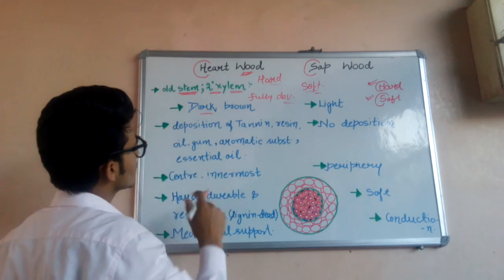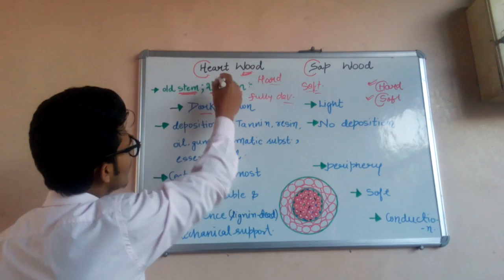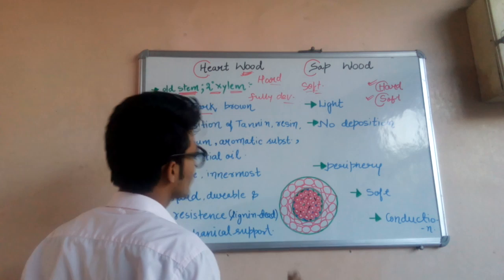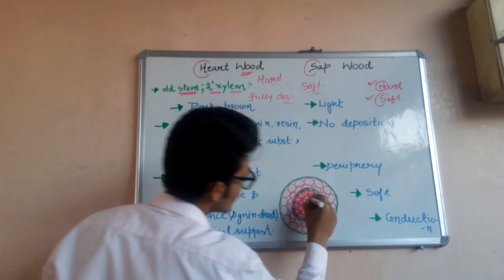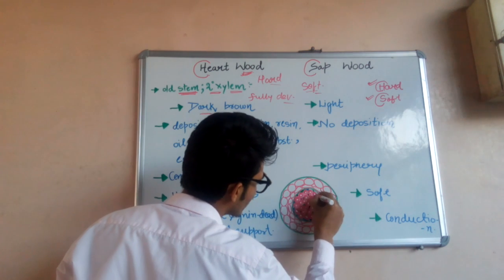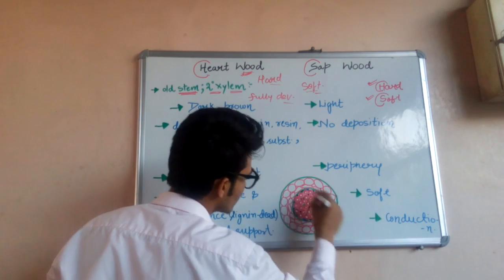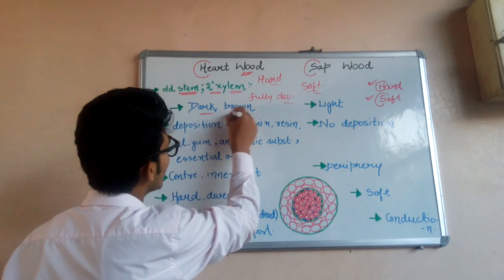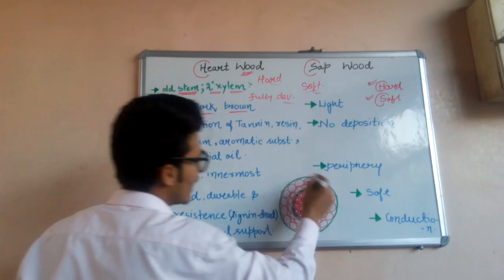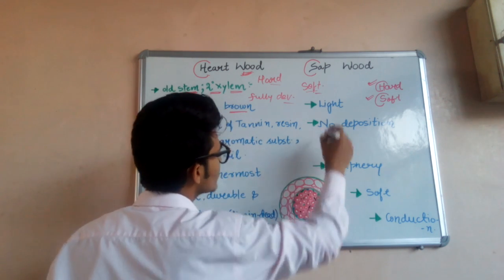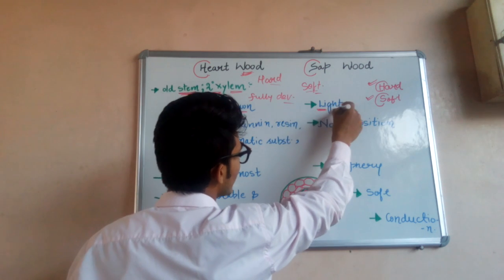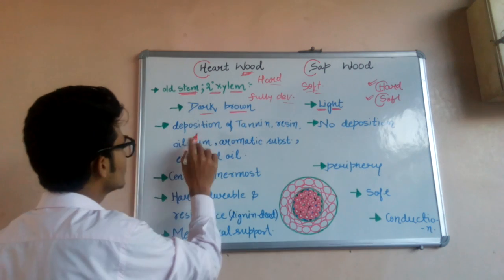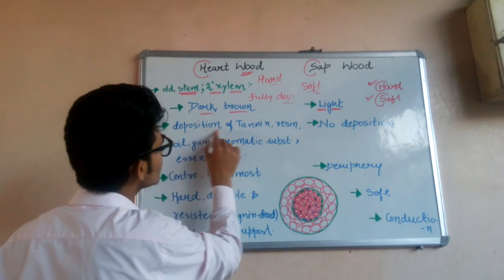The very first difference between hardwood and sapwood is the color. Hardwood, which is hard due to condensed cells present in this region, has a dark brown color. In the outer region, the sapwood color would be light brown.